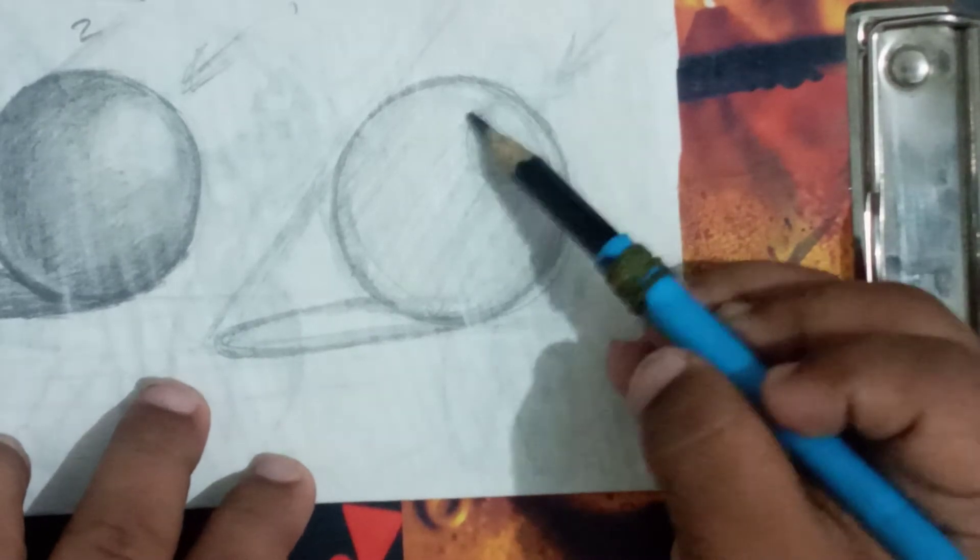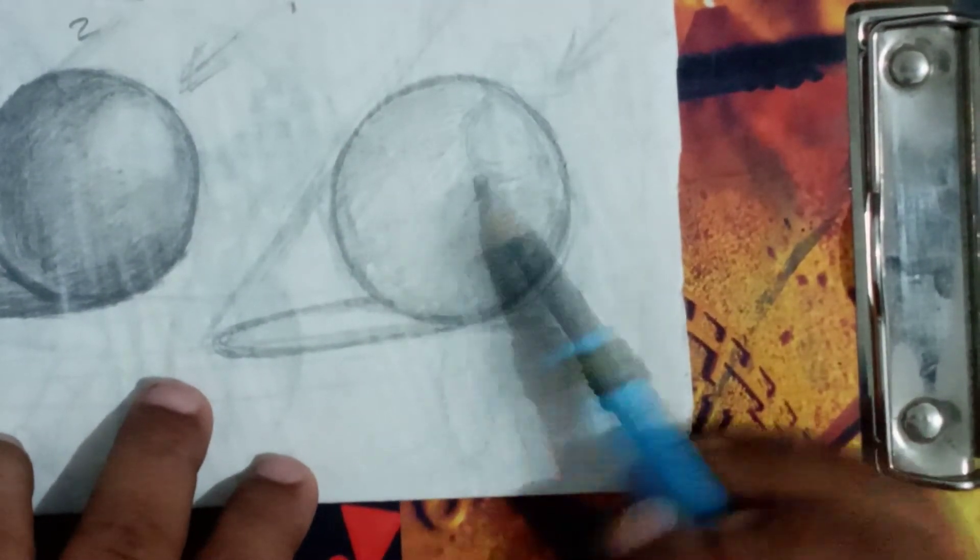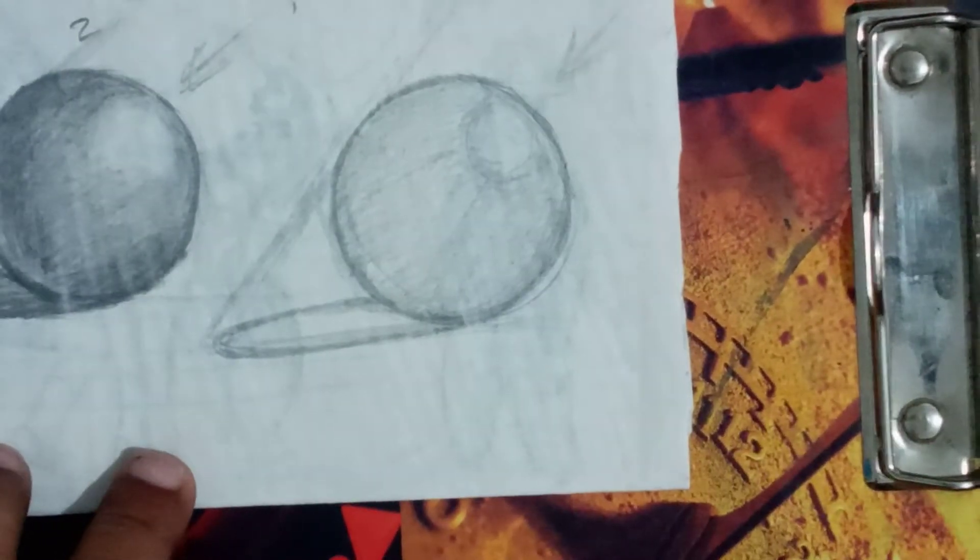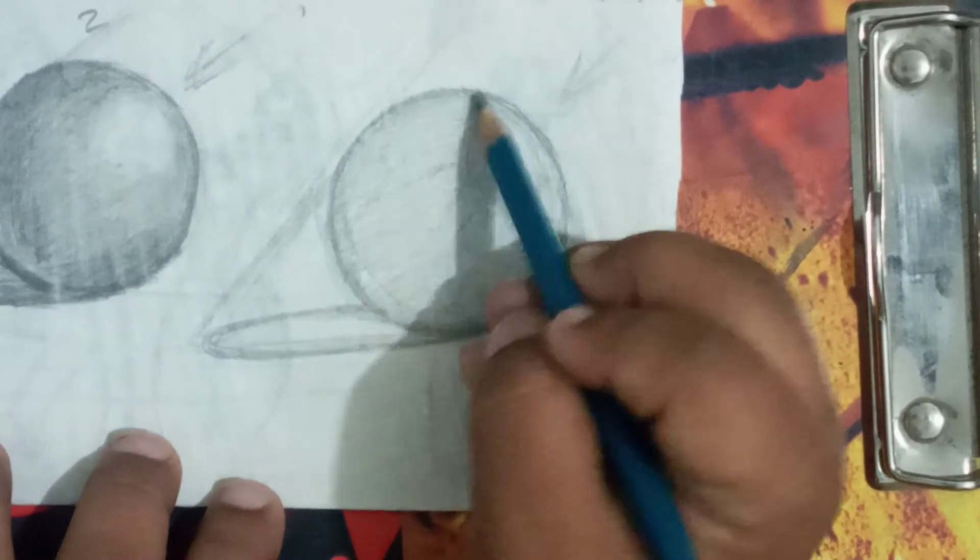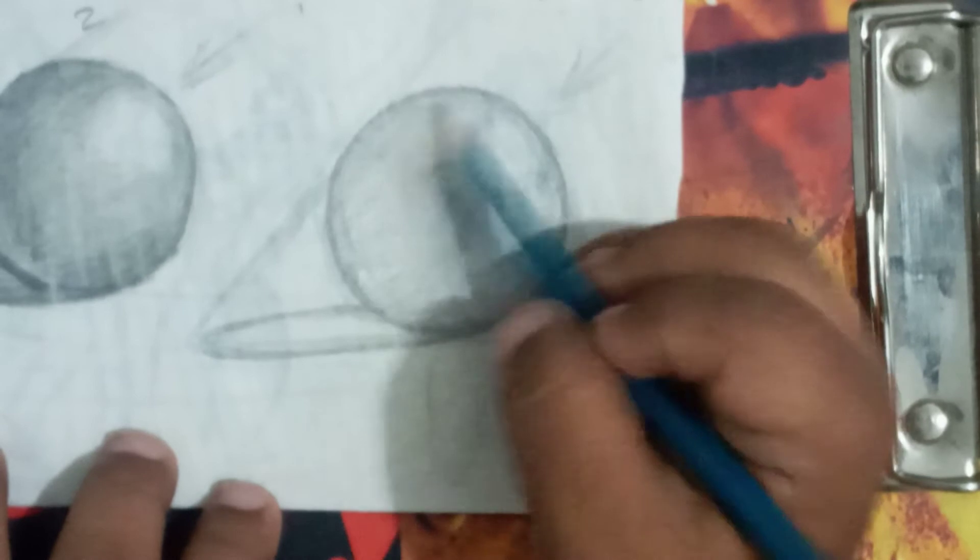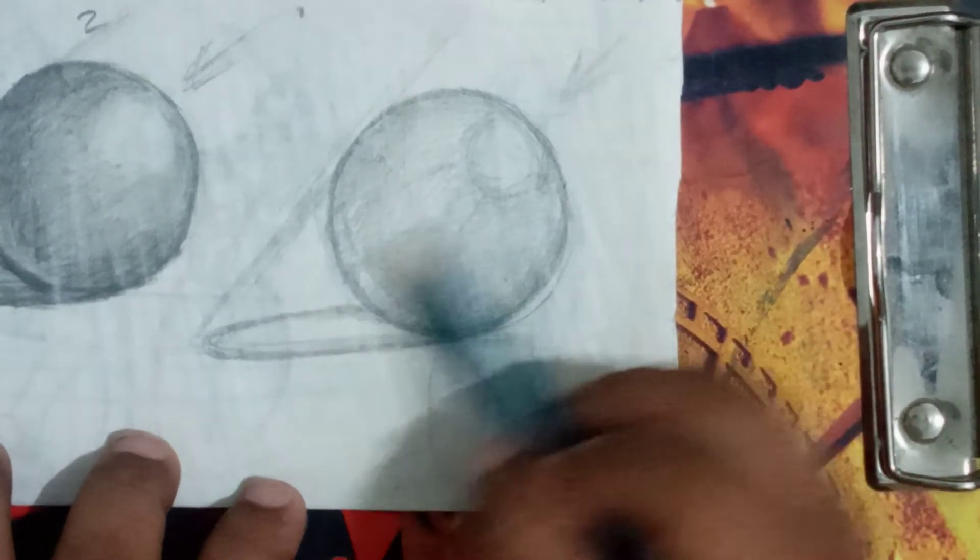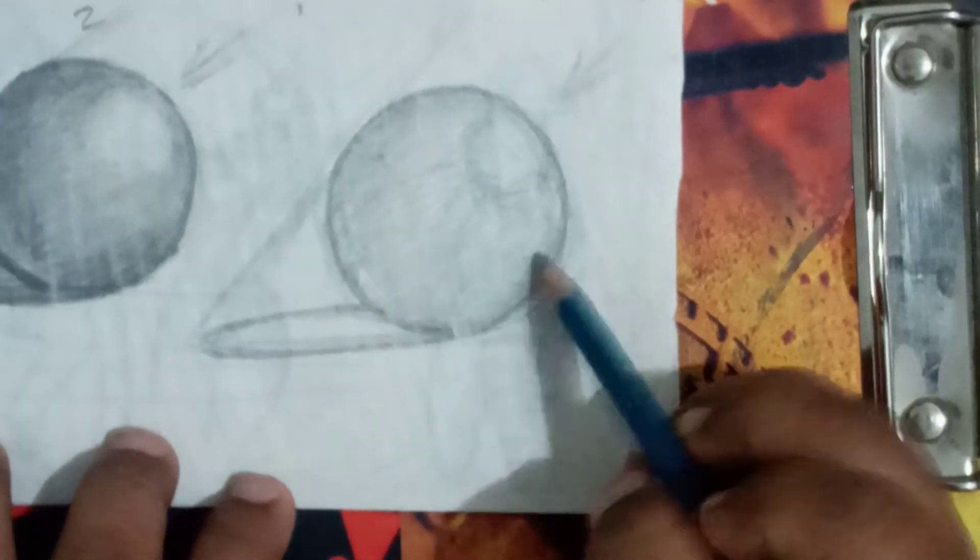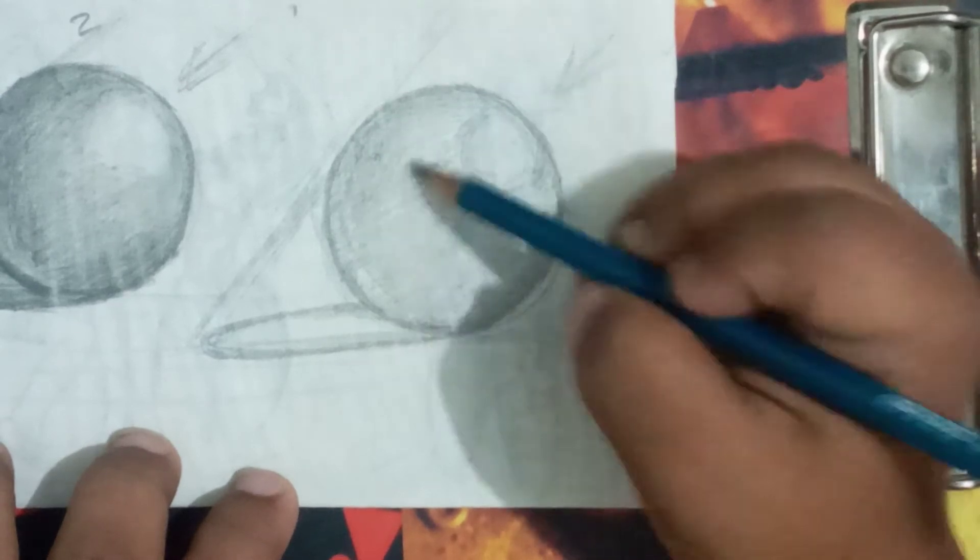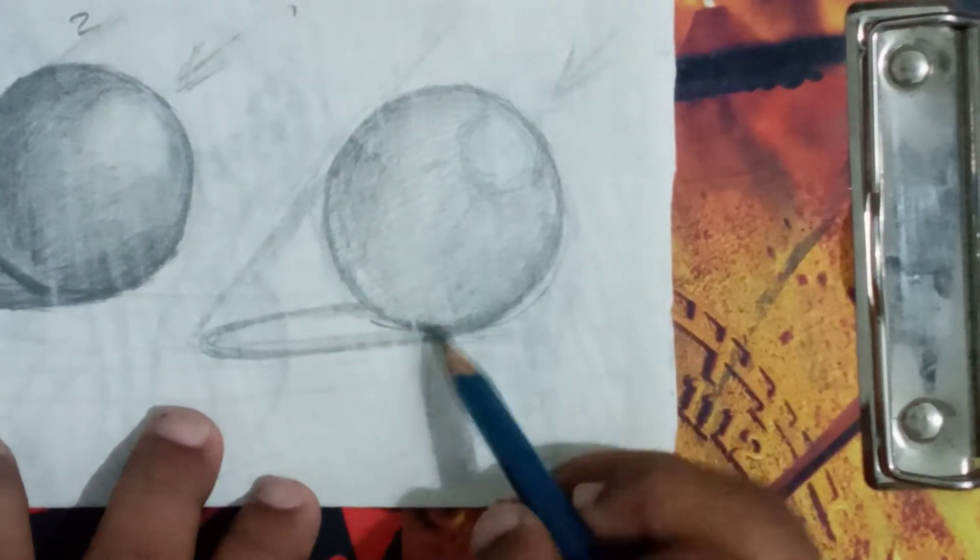You also apply this method. I am using 6B pencil. You also need to observe the dark and light - where needs to be dark or where needs to be light. In the downside, it should be light.